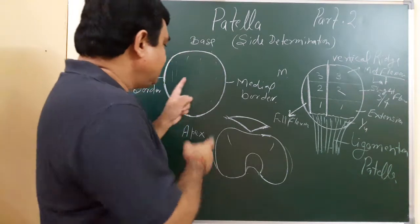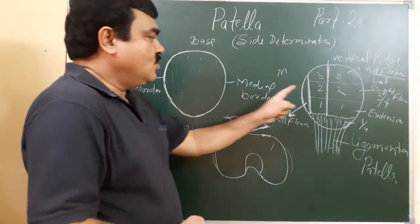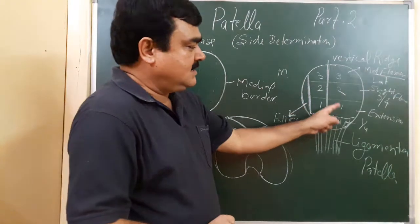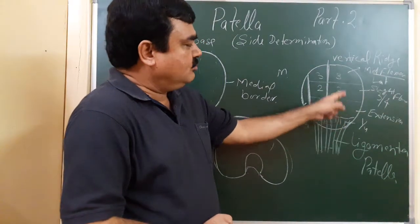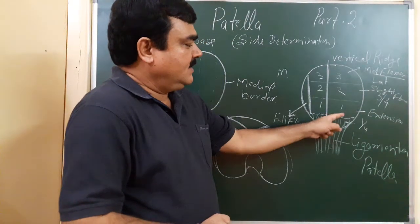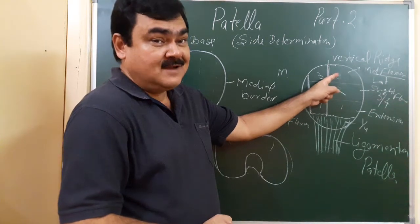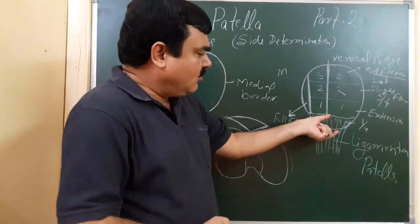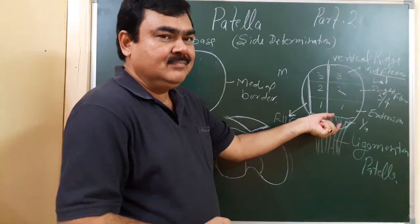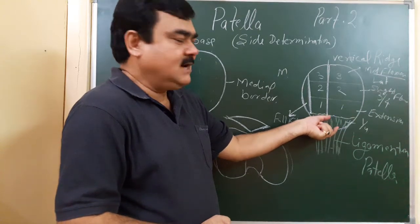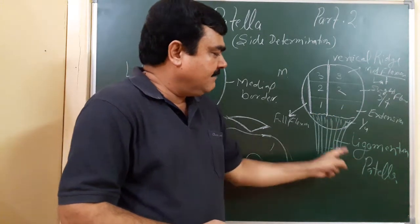The anterior surface is rough. The posterior surface — the upper three-fourth part is smooth; this is the articular surface. Only the lower one-fourth part is rough, and this lower one-fourth part gives attachment to the ligamentum patellae.